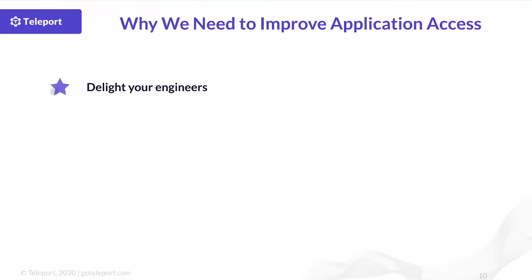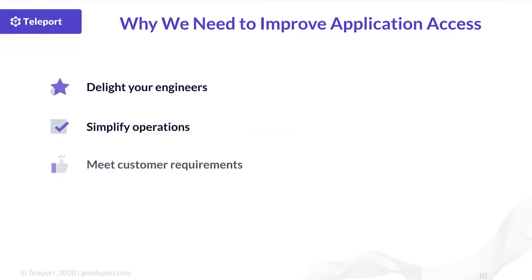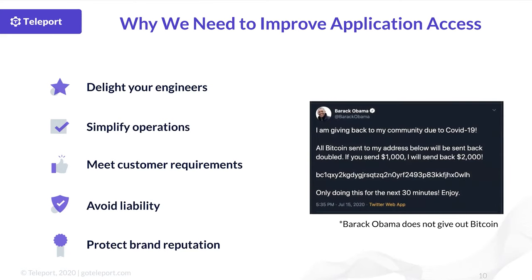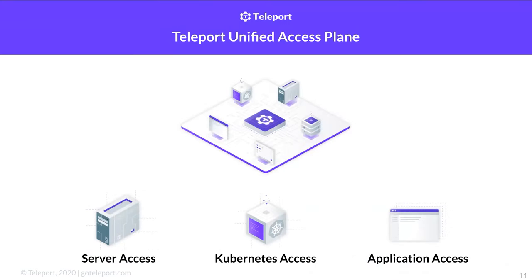So why might you want to take up these new capabilities of Teleport 5? You'll make your engineers happy with an improved user experience accessing their applications. You can further automate platform operations around access control. You can meet your customer requirements for compliance, which means handling more use cases and driving more revenue. You'll be able to avoid potential liability from data breaches and better protect your company's brand reputation. With Teleport 5, now you can centralize access control for remote Linux servers, Kubernetes clusters, and web applications — and we're going to reveal some cool stuff we're doing for databases very soon.